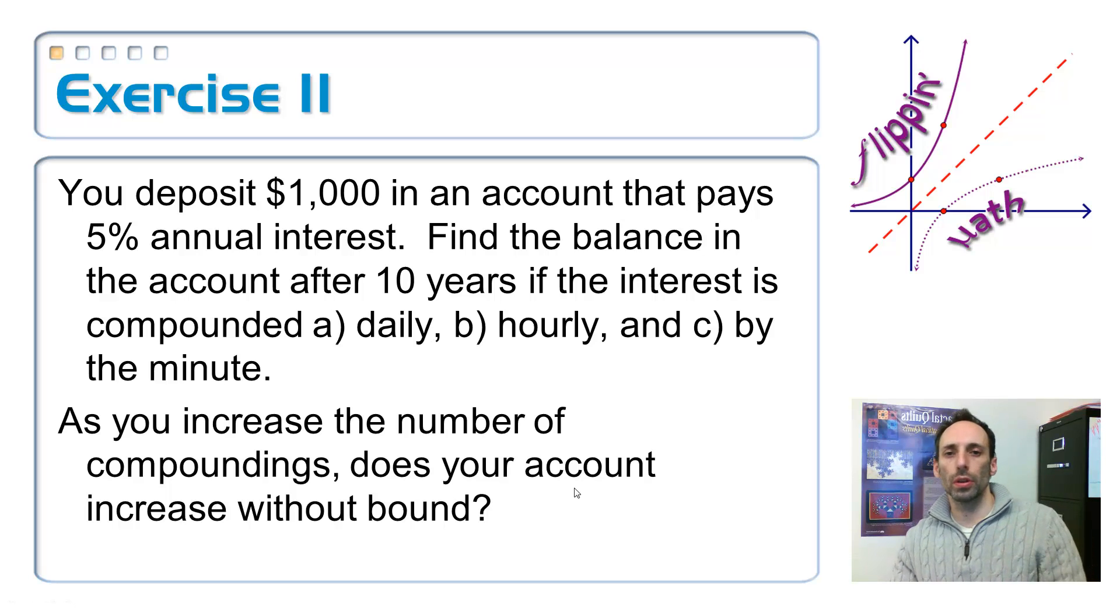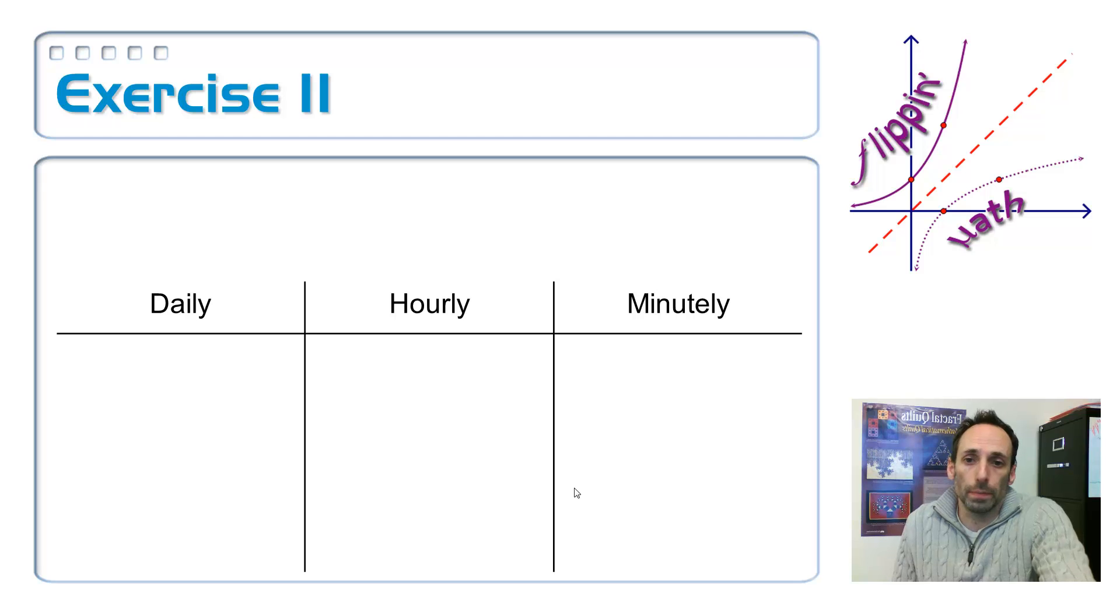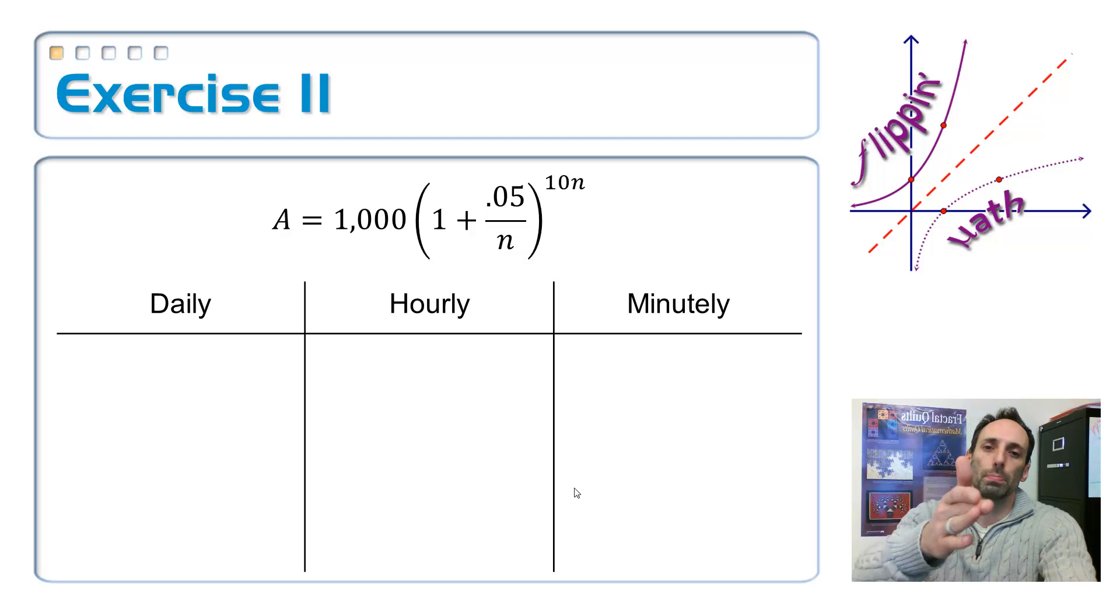So to answer that question, we're going to simplify our values. Let's say we deposit $1,000 in a bank account that pays 5% annual interest. And we're going to find the balance in the account after 10 years if we compound it daily, hourly, or by the minute. And let's see what happens, right? As you increase the number of compoundings, we see that the value in the account gets bigger and bigger. Is it going to get bigger without bound? Is it going to get to like any dollar amount? All right. So here's the equation written out. Just 1,000 times 1 plus 0.05, that's the rate, divided by n. So I'm going to have three different compounding rates raised to the 10n power.